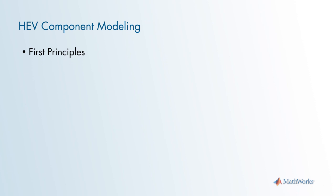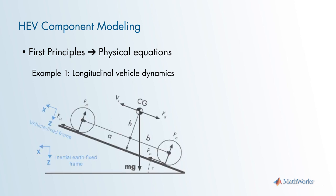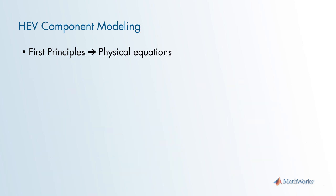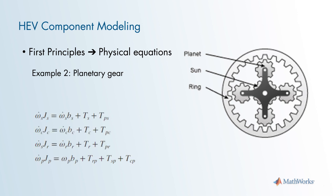First principles modeling is where you use one or more known physical equations to model a component or system. An example is longitudinal vehicle dynamics — a free body diagram of a one degree of freedom vehicle moving longitudinally with all forces, including drag, acting upon it. Another example is a planetary gear, which has dynamic, kinematic, and geometric equations.